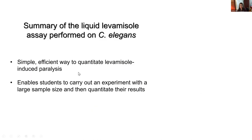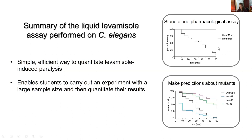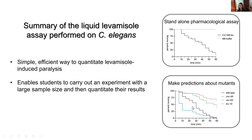In conclusion, this assay is a simple and efficient way to quantitate levamisole-induced paralysis, and importantly it does not require picking or prodding of the animals, making it suitable for undergraduate laboratories as well as for researchers studying the neuromuscular junction. Students collect a sizable amount of data that can be quantitated and discussed. It can be used as a standalone lab in an introductory class to demonstrate the consequence of increasing postsynaptic cholinergic signaling, or in a more advanced class with both wild-type and mutant animals. By modifying the medium in the 24-well plates, the levamisole swim assay can also be performed on RNAi knockdown animals.